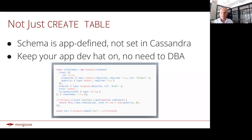An important thing to note is that a schema in the Mongoose application is not just a wrapper for CREATE TABLE. The schema is application-defined — it's not set in Cassandra. Thanks to the super shredding data model that Aaron and his team have built out, the schema lives entirely in the application. So as an application developer, you can keep your application development hat on. No need to switch to doing database admin when you want to add a new property to your schema during local development.